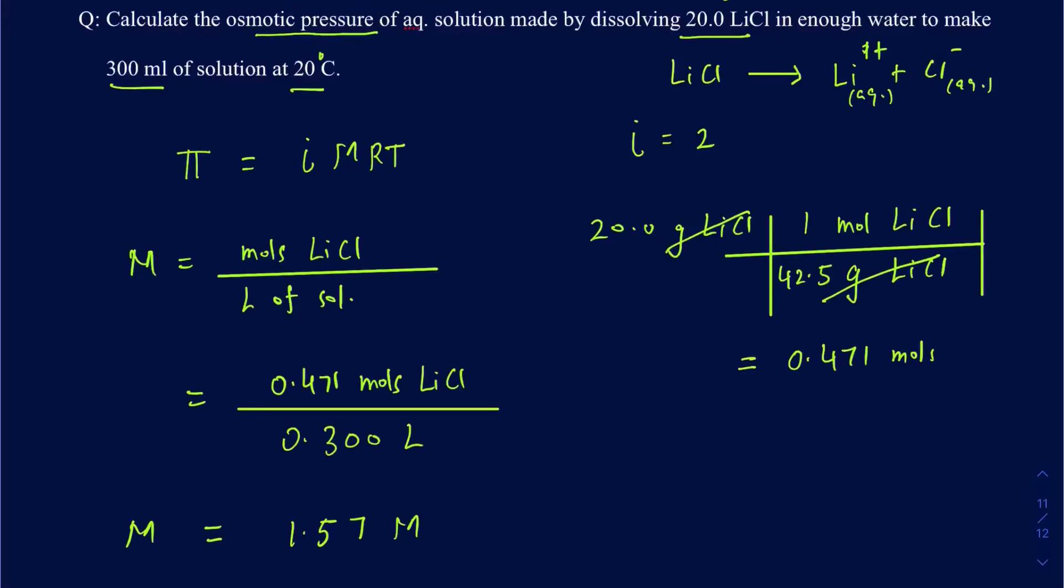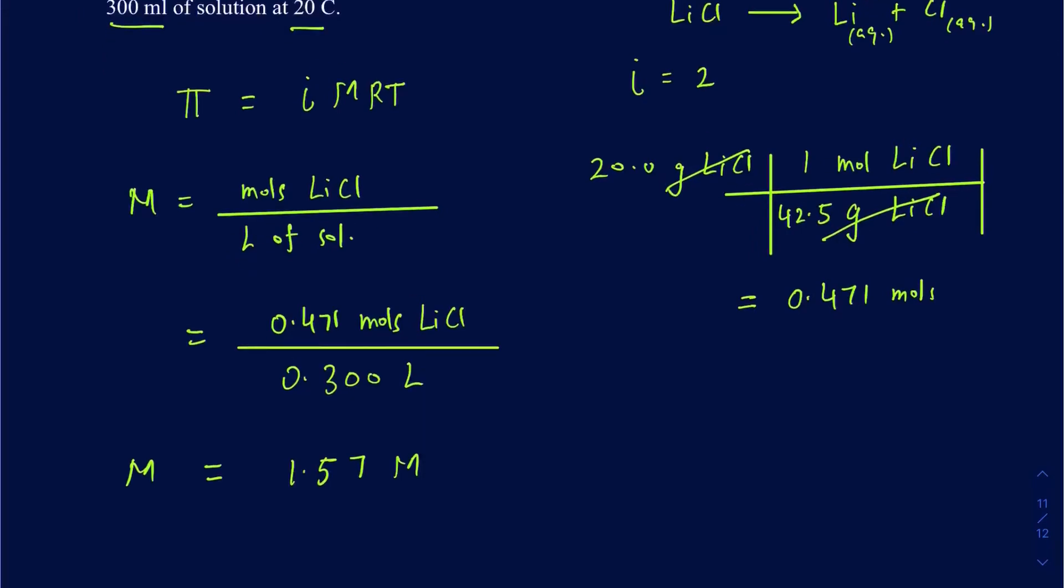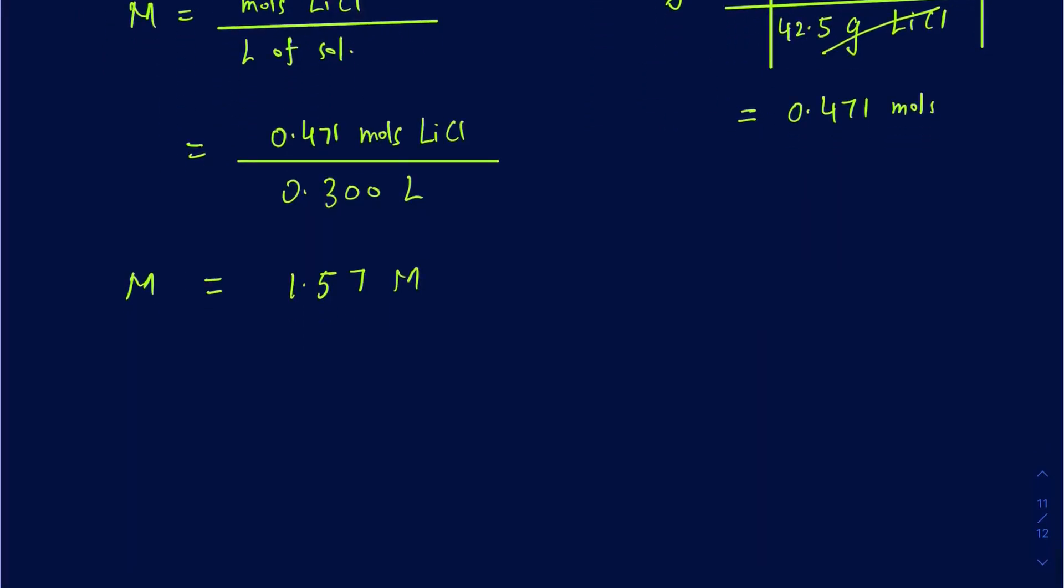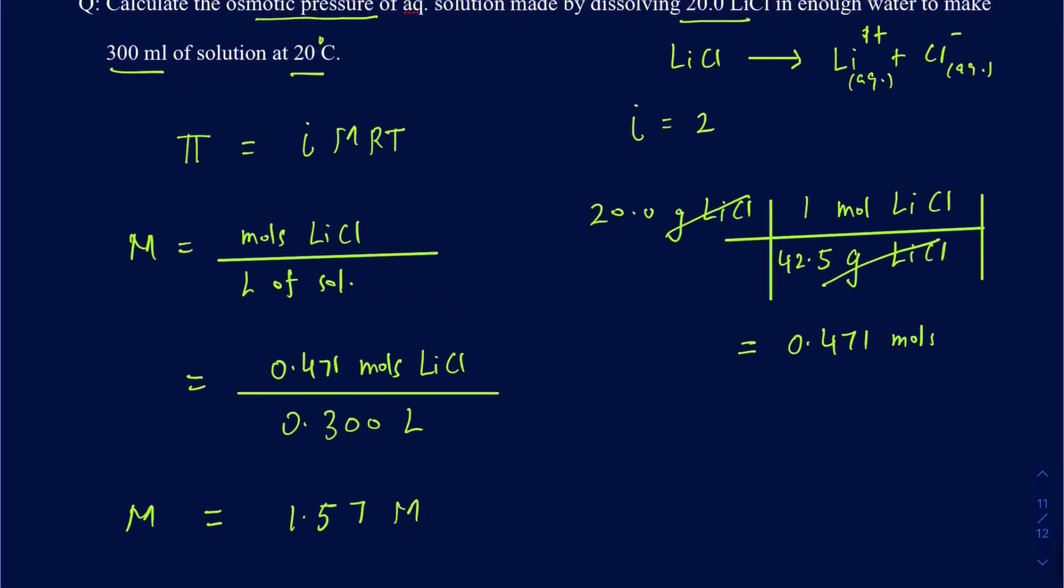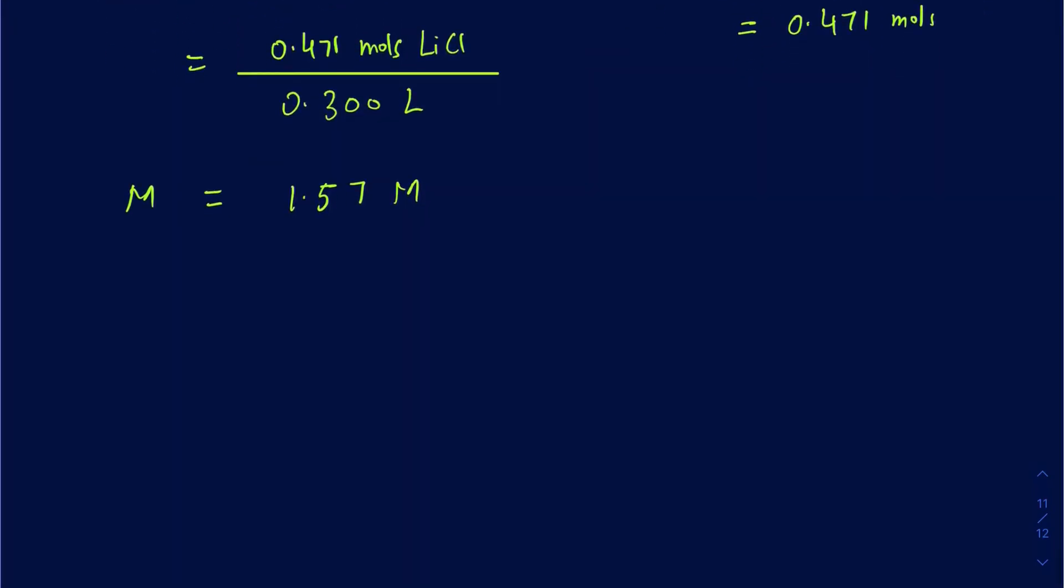What else do we need? Well, we got the i, we got the molarity, we know the R. R is just going to be your gas constant. And the temperature needs to be in Kelvin scale. So make sure you use T to be 20 plus 273.15, so that's going to be 293.15 Kelvin temperature.